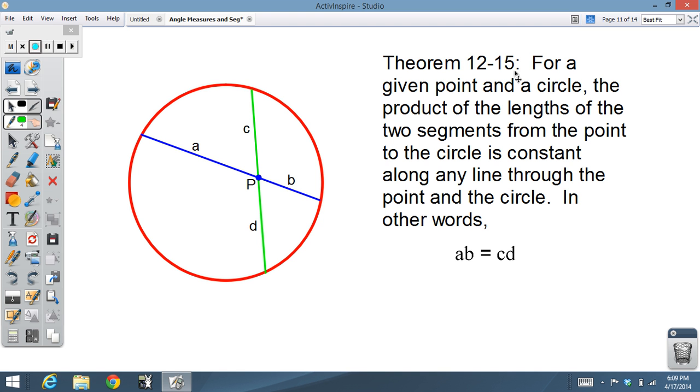So segment lengths, theorem 12-15. For a given point, any point, whether it's inside or outside, the lengths of the two segments from that point to the circle, so for example the green line from here to here or here to here, the product of those two lengths is going to be equal to the product of the lengths for any other line. So the product of c times d is going to equal the product of a times b, or true for any other line. No matter what, we got a line intersecting inside the circle, a times b equals c times d.